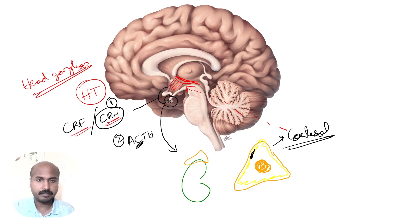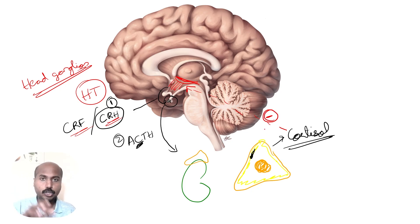So cortisol causes a negative feedback loop, suppressing CRH release. This is the entire loop of the HPA axis.